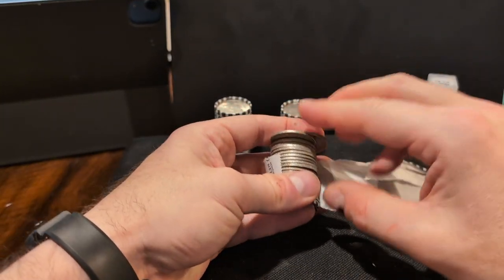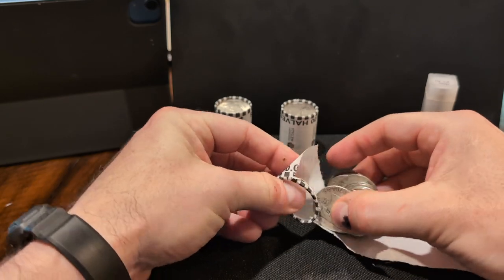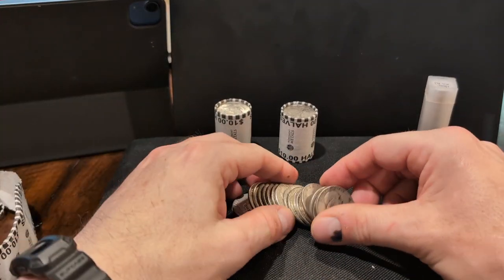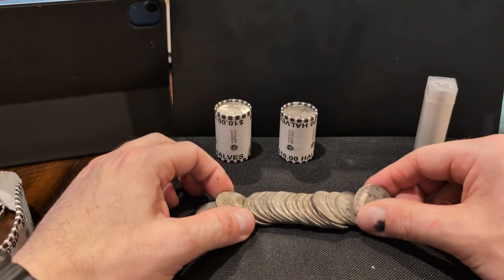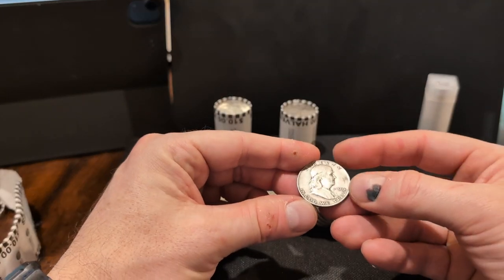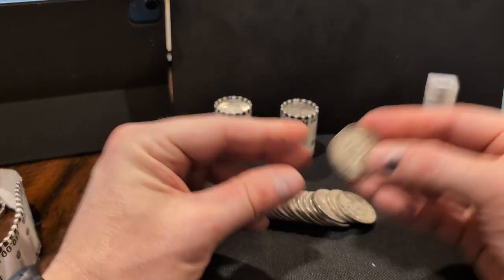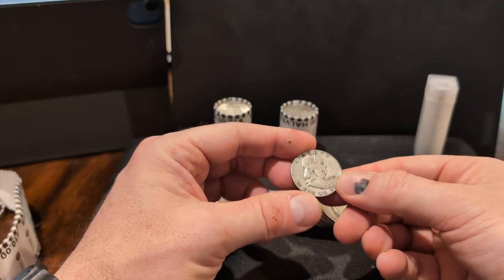All right, so here's the Franklin halves, and these are going to be not as nice as the dimes, like here. So it's still silver.